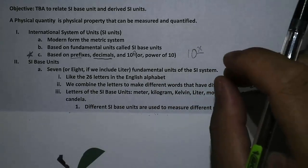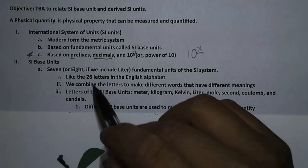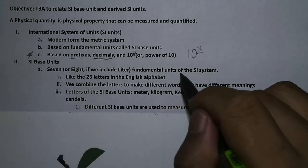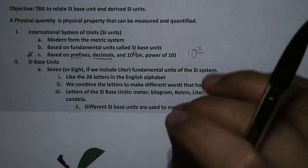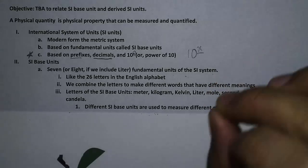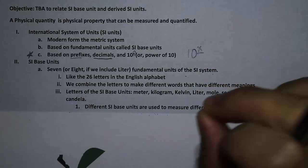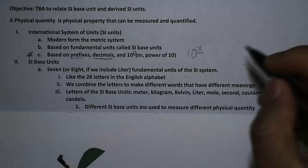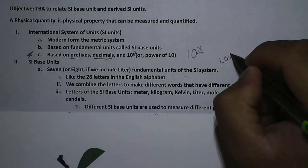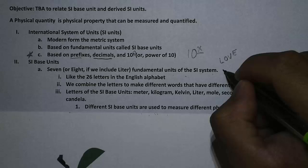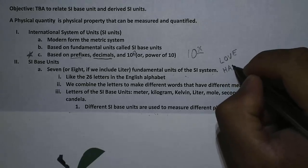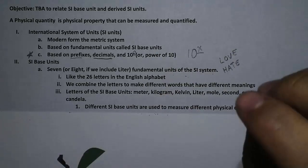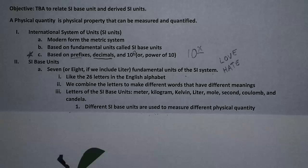There are 7 or 8 SI base units — 8 if we include liter for volume. The fundamental units are like the 26 letters of the English alphabet, where we combine letters to make different words with different meanings. For example, L-O-V-E represents love, or H-A-T-E represents hate — completely different meanings. In the SI system, there are only 8 such letters.